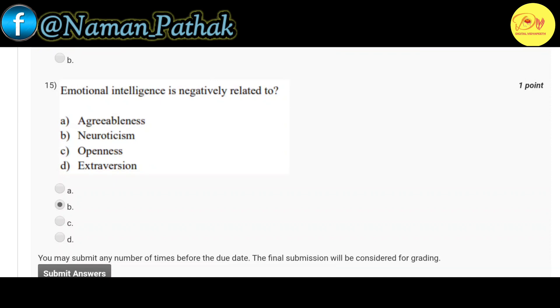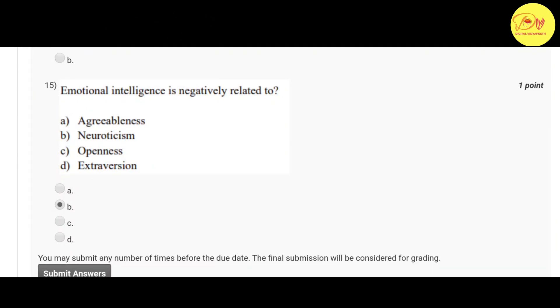And the last one is the fifteenth question: emotional intelligence is negatively related to. Correct option is B, neuroticism.